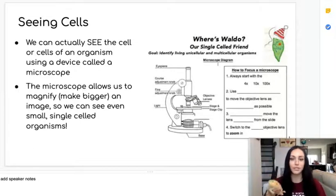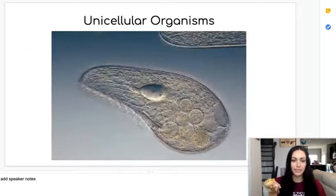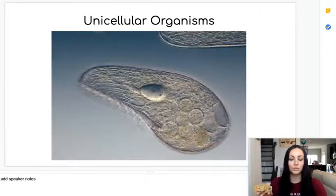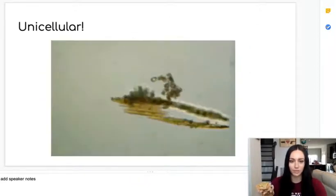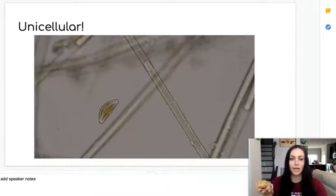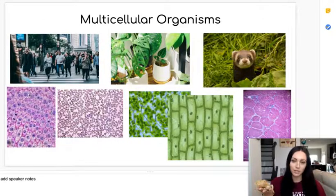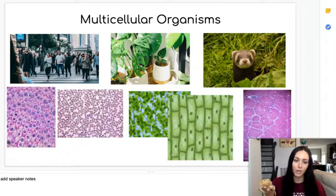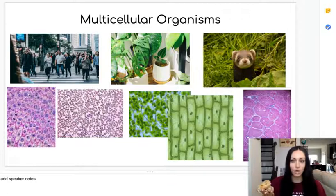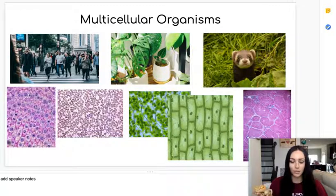Attached to this lesson you will find a Google Slideshow. In it you will find several examples of magnified images of cells from under a microscope, including different unicellular organisms as well as cells from multicellular organisms including humans, plants, and animals. Take a moment now to open the slideshow and take a closer look at all of our magnified examples, and see what the cells of all the different organisms look like under the microscope.